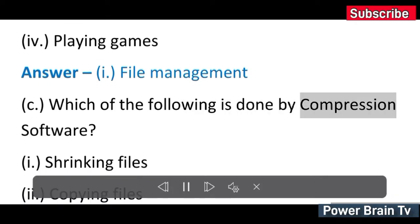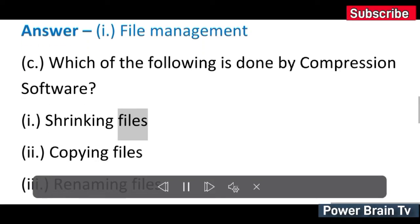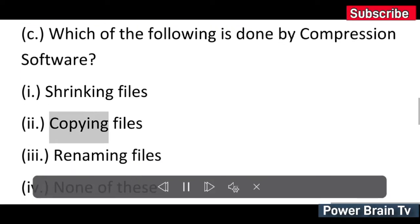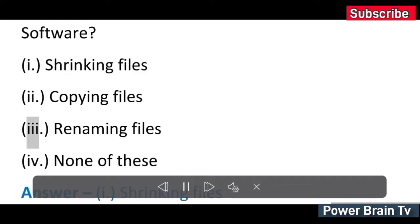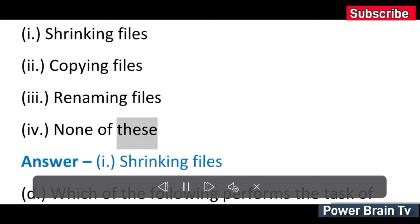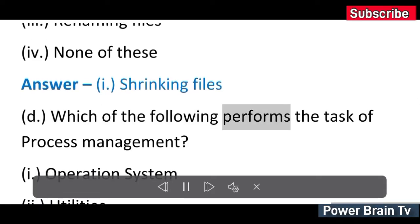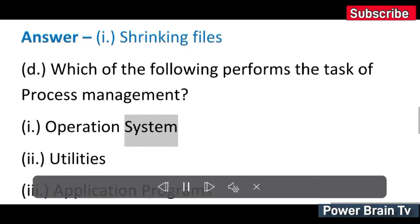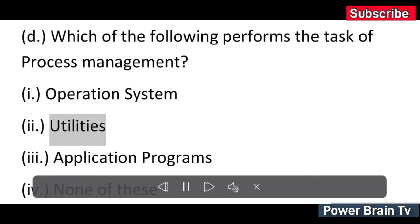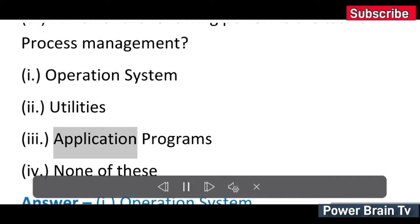(c) Which of the following is done by compression software? (i) Shrinking files (ii) Copying files (iii) Renaming files (iv) None of these. Answer: (i) Shrinking files. (d) Which of the following performs the task of process management? (i) Operating system (ii) Utility.